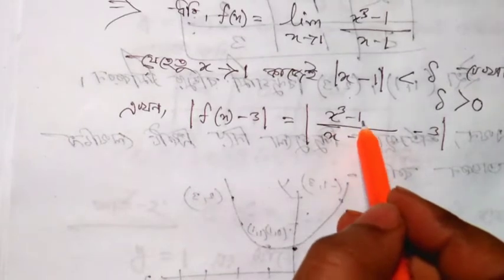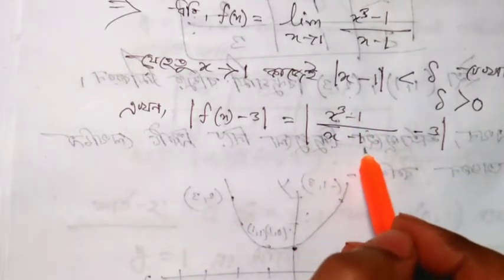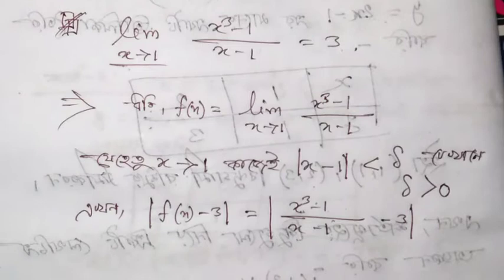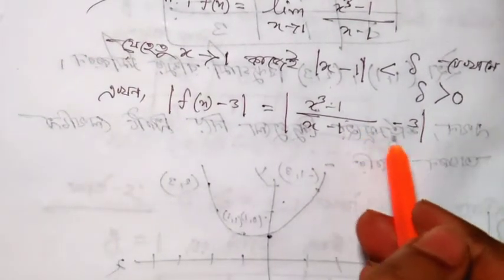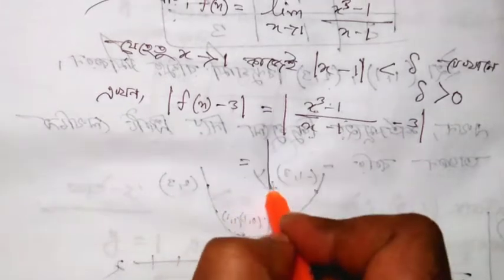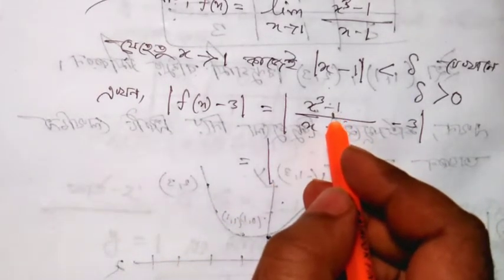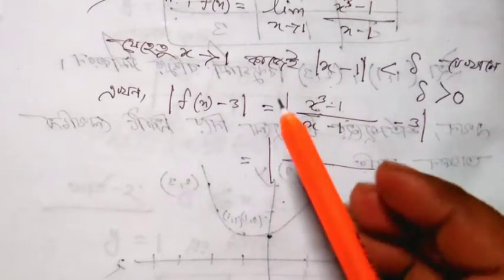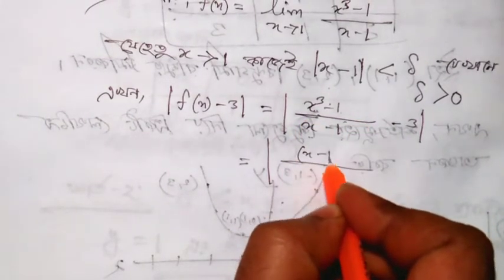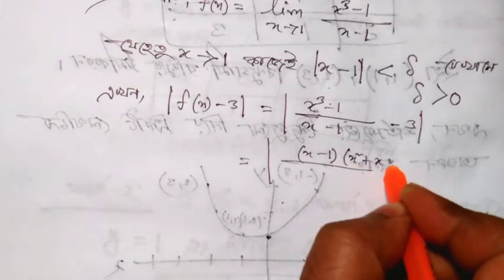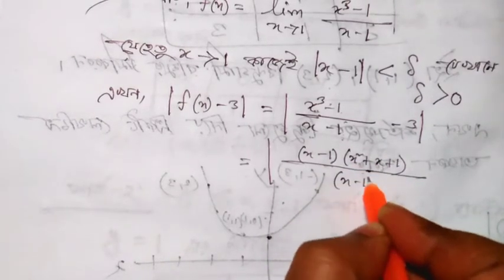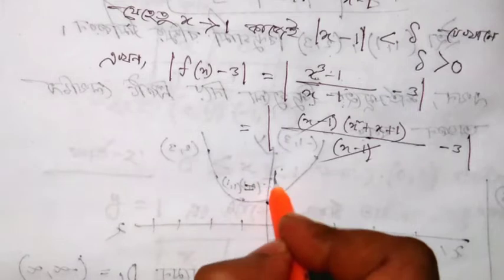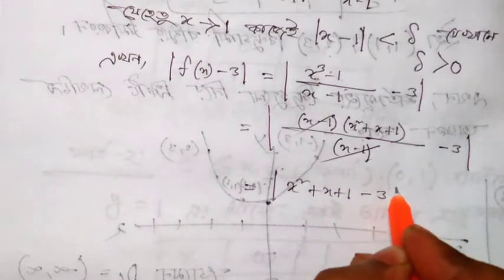We have x-cubed minus 1 divided by x minus 1. We factor the numerator: x-cubed minus 1 equals x minus 1 times x-squared plus x plus 1. So the x minus 1 terms cancel, and we are left with x-squared plus x plus 1. Now we subtract 3 from this expression.